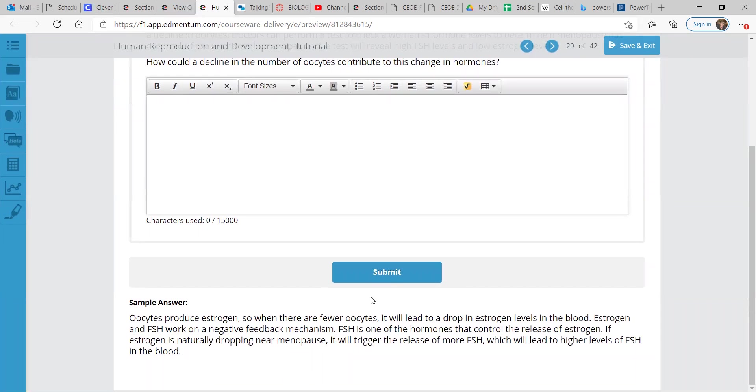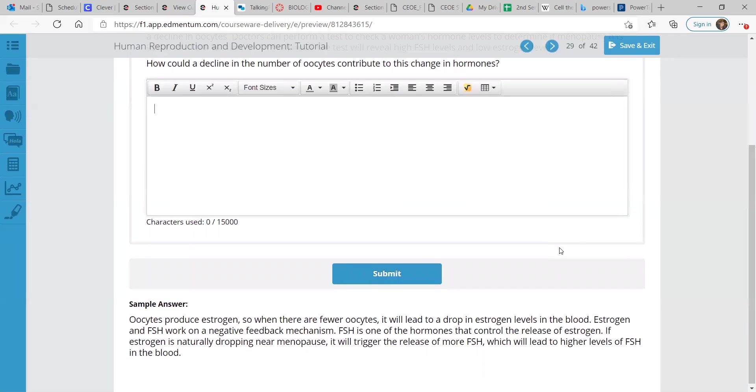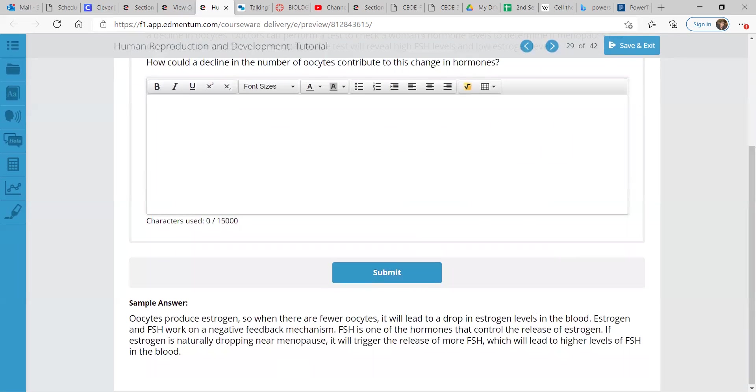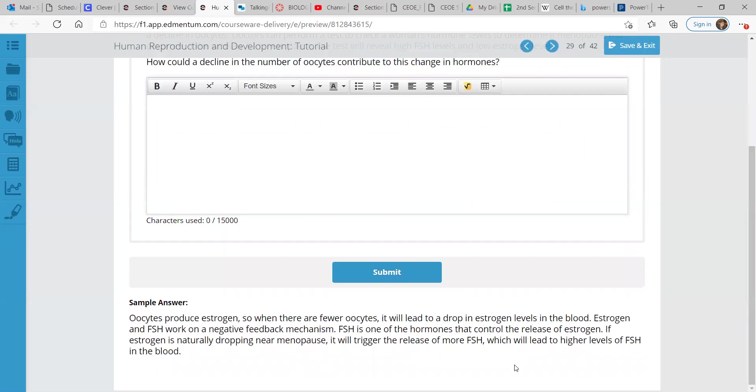Well, these produce estrogen, so when there are fewer oocytes, it will lead to a drop in estrogen levels in the blood. Estrogen and FSH work on a negative feedback mechanism. FSH is one of the hormones that control the release of estrogen. If estrogen is naturally dropping near menopause, it will trigger the release of more FSH, which will lead to higher levels of FSH in the blood.